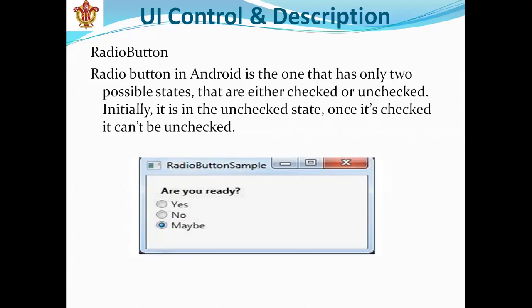Initially, the radio button is in the unchecked state. Once it is checked, it can't be unchecked. The initial state of the radio button is the unchecked state. When you tick on it, it can't be unchecked — that is called the radio button. It is used in various quizzes, questions, and other forms of multiple choice questions.